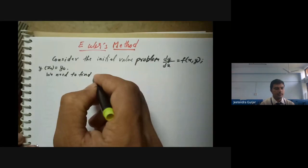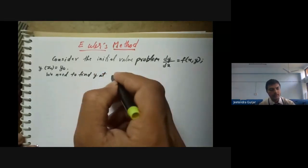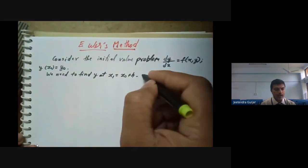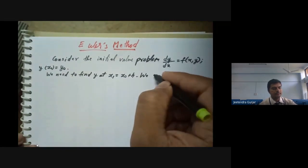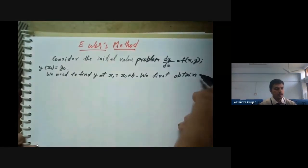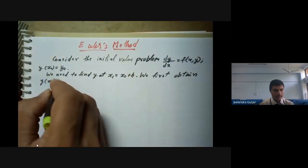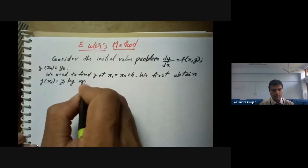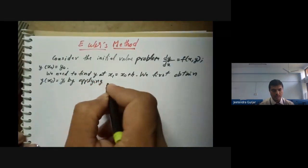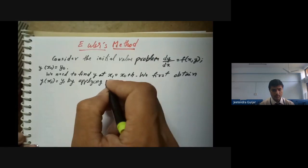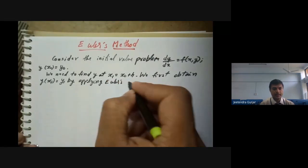Today we are studying Euler's method. We first take the initial value problem dy/dx = f(x, y), with y(x₀) = y₀. We need to find y at x₁ = x₀ + h, where x₀ is the initial value and h is the step interval.